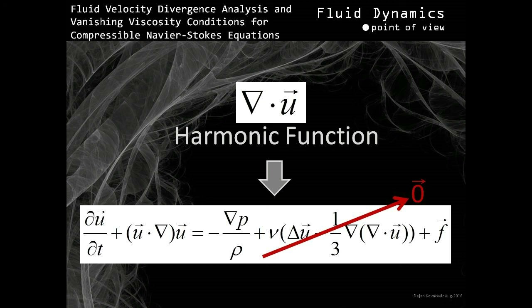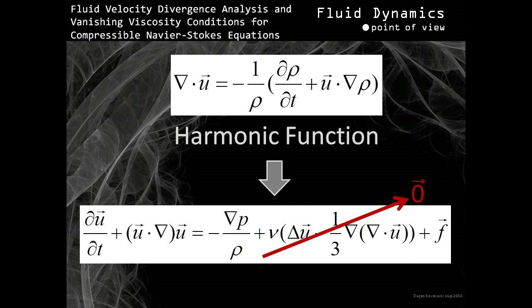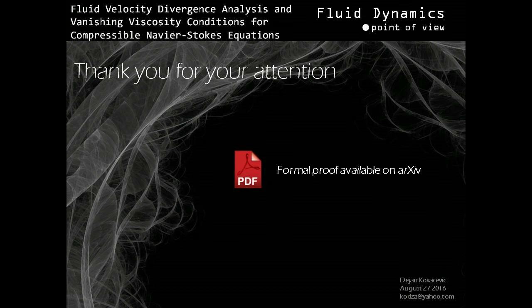Therefore, we conclude that fluid velocity vector field divergence which is a harmonic function is the condition for vanishing viscosity term of the Navier-Stokes equation for compressible fluids. As previously concluded, fluid velocity vector field divergence can be expressed in function of fluid density and fluid velocity. Finally, we conclude that the following statement representing fluid velocity vector field divergence must be a harmonic function as a condition for vanishing viscosity of the Navier-Stokes equations for compressible fluids. Such conclusion might represent an opportunity for better understanding of conditions leading to triggering turbulent behavior in fluids. A formal proof paper is currently available on the arXiv, pending formal review process. Please follow the link provided to access the formal proof paper.